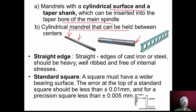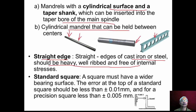Another important instrument is the straight edge, normally made of cast iron or steel. These should be heavy, well ribbed and free of internal stresses. The top surface and the bottom surface should be parallel to each other.